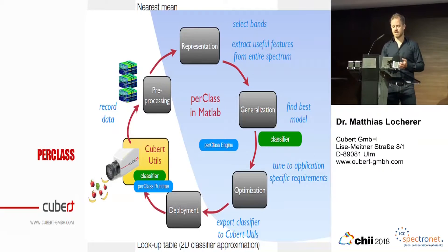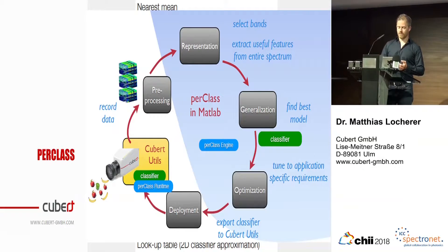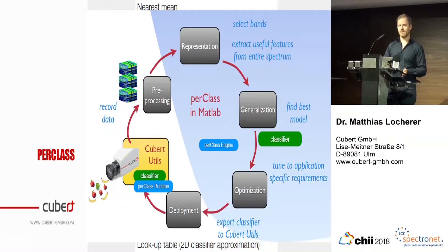The necessary bands are selected, the best model is identified, the model can be tuned, and it can be exported as a plugin to the Qubit Util software where it can be applied to live data. Nevertheless, this still requires that the customer has an idea of mathematical classifiers and at least some programming skills, so a high understanding is still necessary. In order to overcome this, we can use the MIRA interface — it's a graphical user interface involving this PerClass classification.